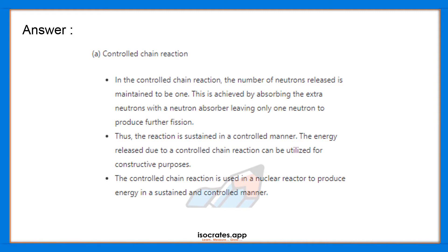Thus, the reaction is sustained in a controlled manner. The energy released due to a controlled chain reaction can be utilized for constructive purposes. The controlled chain reaction is used in a nuclear reactor to produce energy in a sustained and controlled manner.